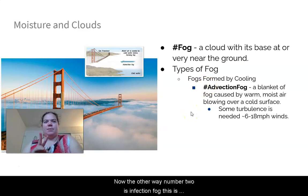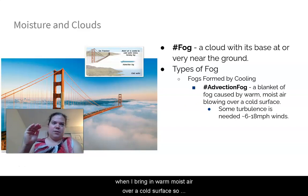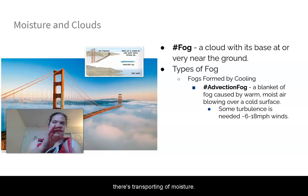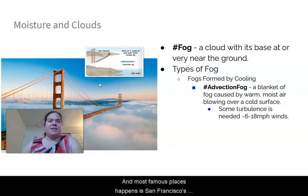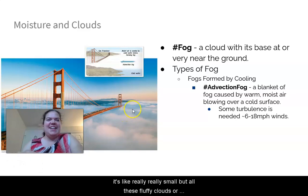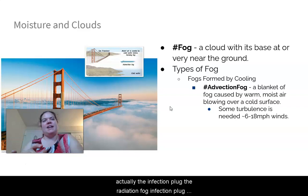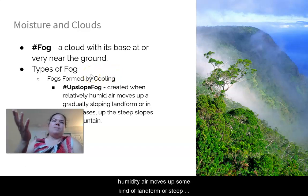Type two is advection fog — warm, moist air transported over a cold surface. Wind of roughly 6–18 mph is needed. The most famous example is San Francisco's Golden Gate Bridge, where marine air moves over cold Pacific waters. Those fluffy clouds you see flowing over the bridge are advection fog.